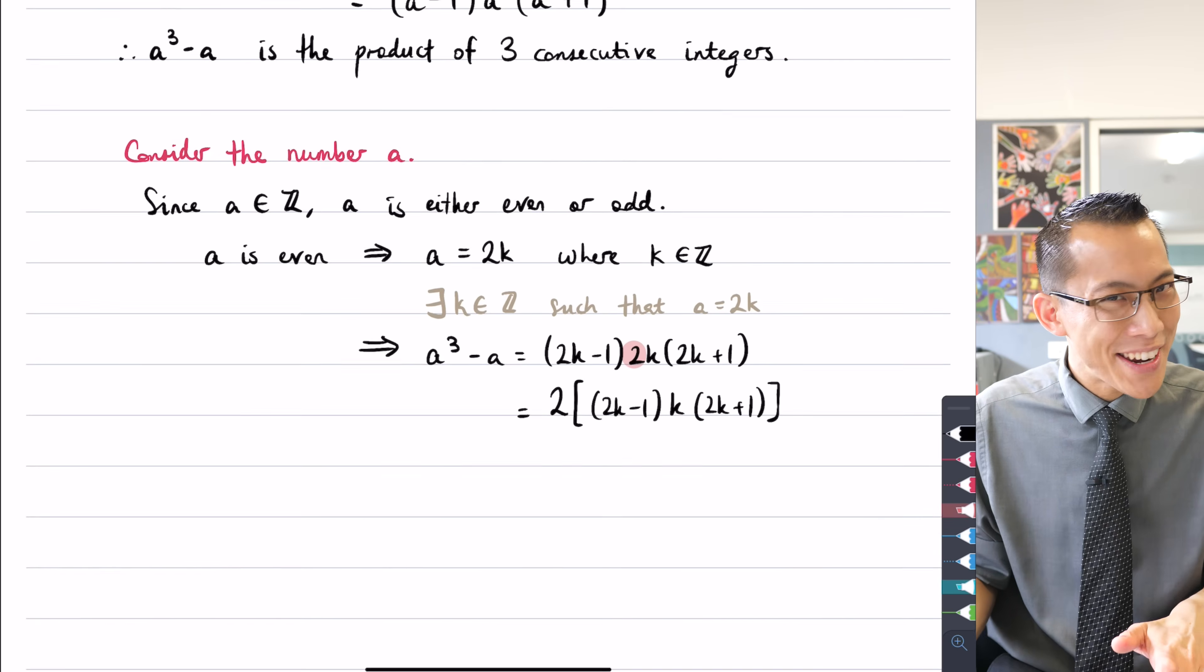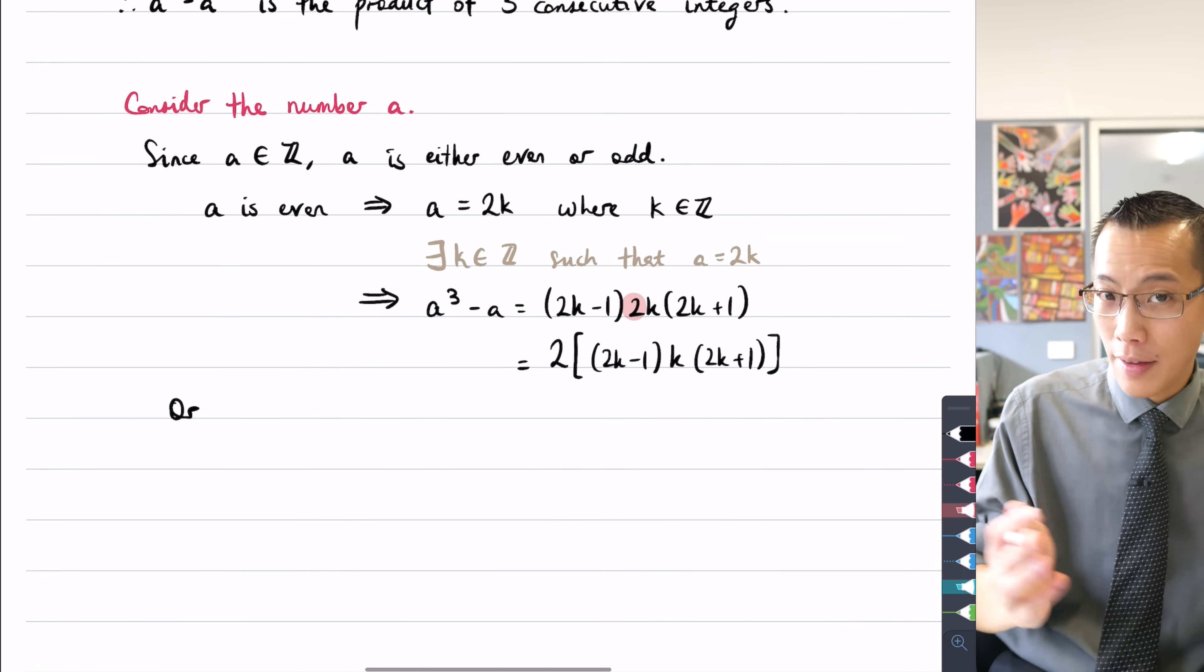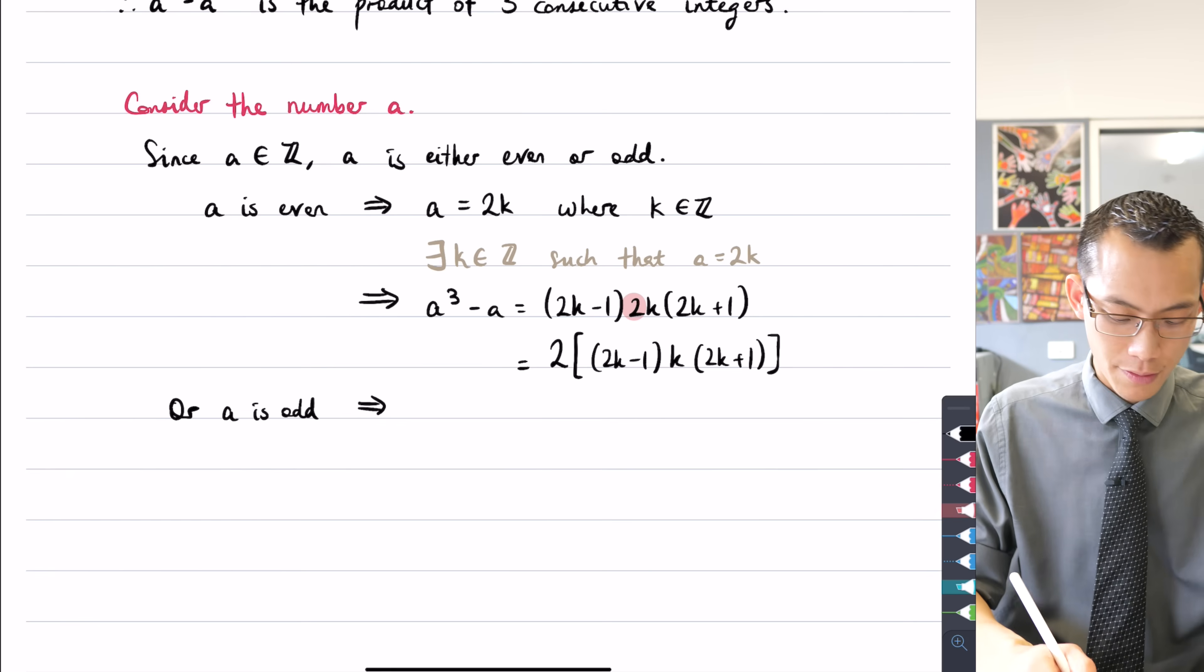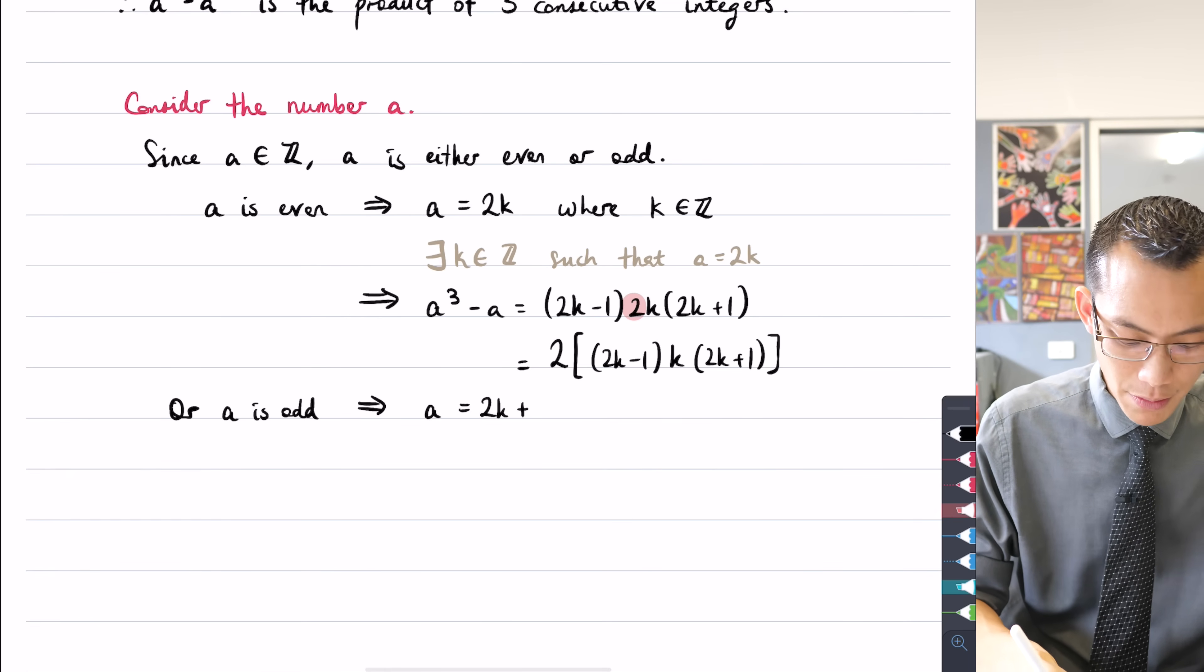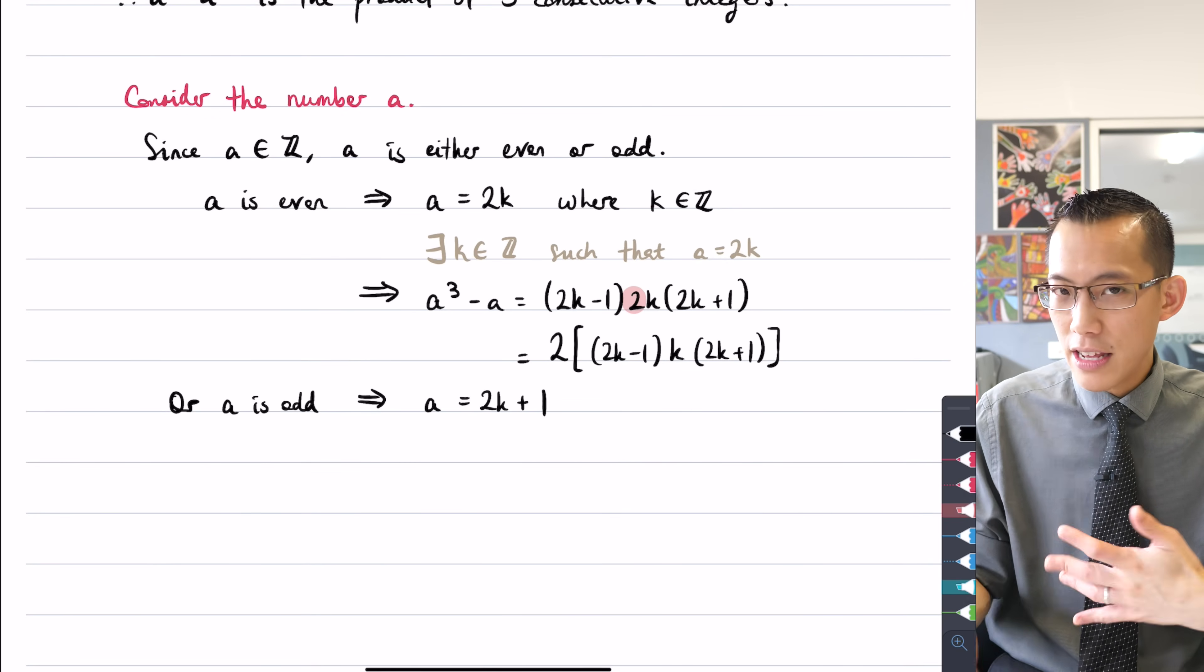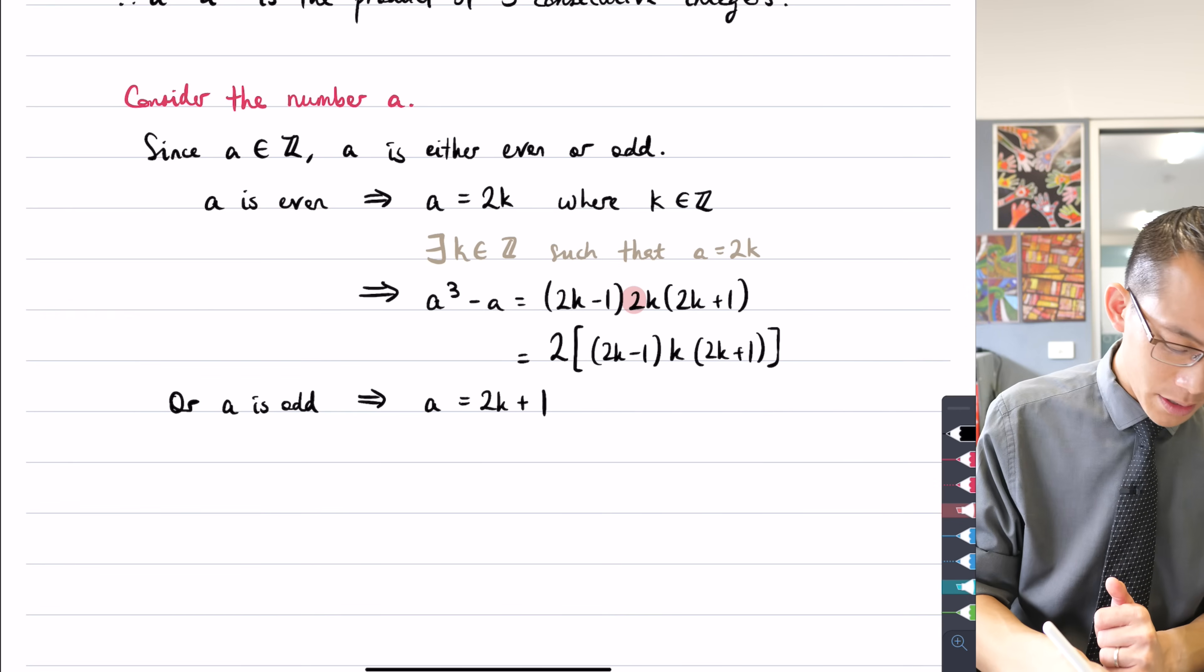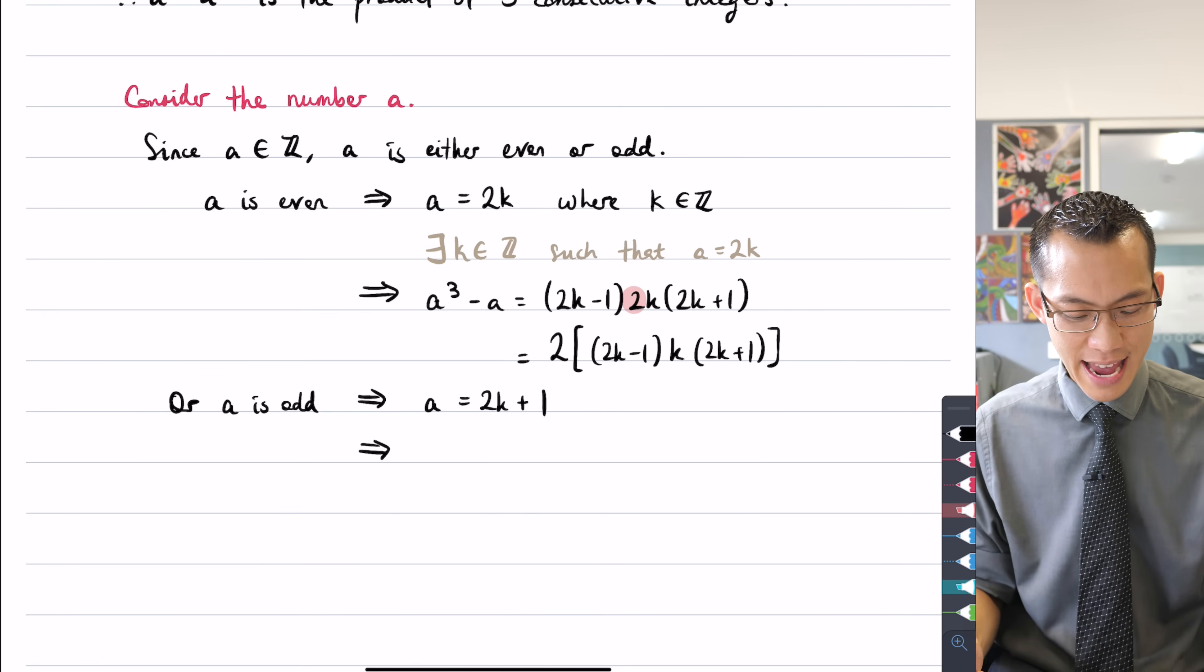But of course, a might not be even. We're trying to say a could be any number. So I can say, or if a is not even, a will be odd. Now, what this implies is that I have to write a in a different form. I would have to say a equals 2k + 1. I don't have to introduce k again because I already did it up the top here. So now I want to say, if that is true, if a is odd and it can be written in the form 2k + 1, what does that imply about a³ - a?